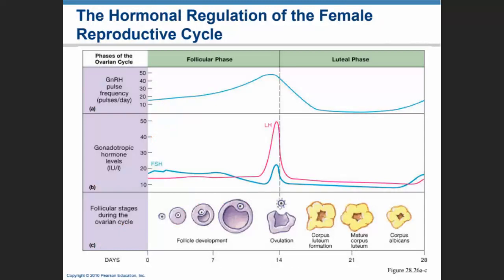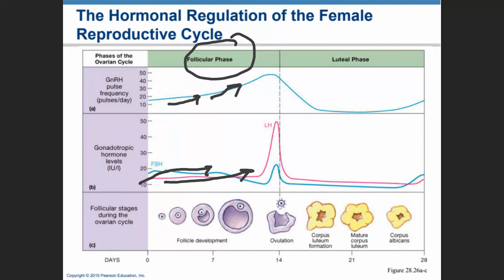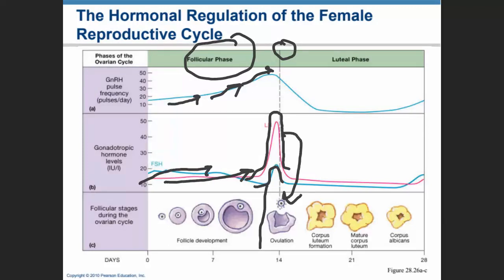From this diagram you can see the follicular phase of the ovarian cycle. At the very beginning, GnRH is secreted in increasing amounts, causing the secretion of FSH and LH and the development of the follicle. Right at day fourteen, there is a sudden surge of GnRH, which causes a tremendous surge in LH and FSH. LH is the hormone of ovulation and will cause ovulation to happen.